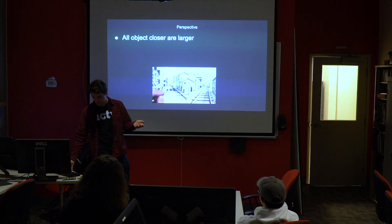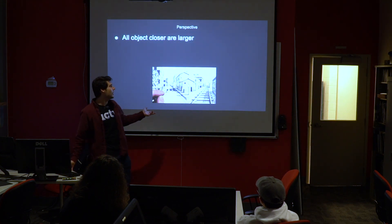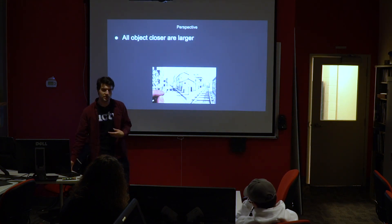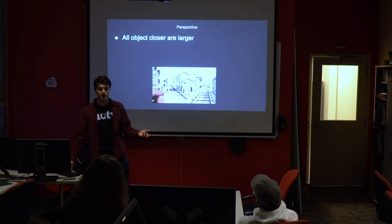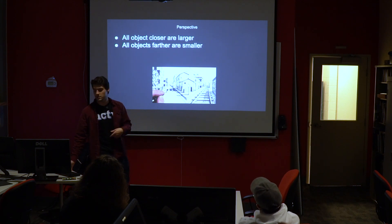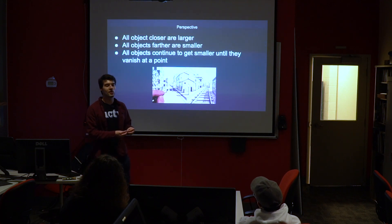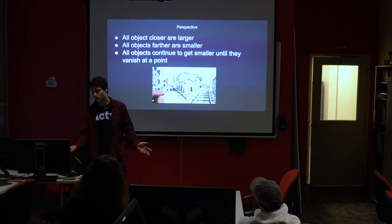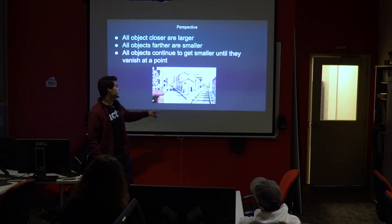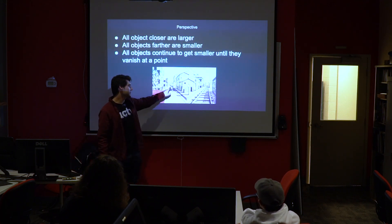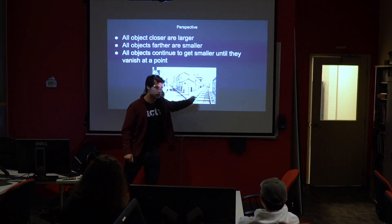Perspective: it's basically the idea that objects that are closer are larger, and objects that are farther are smaller. All objects continue to get smaller until they completely disappear at a vanishing point. The vanishing points in this image are here and here.